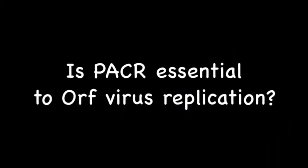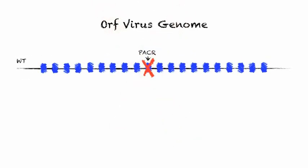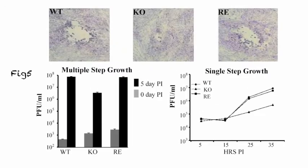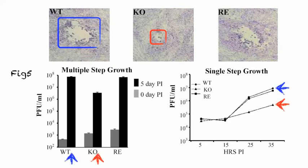To further characterize PACER, a recombinant virus was constructed in which the PACER gene was deleted from the genome. The successful generation of the recombinant virus without PACER demonstrates that PACER is not essential to ORF virus replication. However, plaque size from the recombinant virus, shown in red, was significantly smaller than its normal counterpart. In addition, the growth of the recombinant virus during infection was substantially impaired. Thus, PACER, despite not being essential, plays a significant role in ORF virus replication.